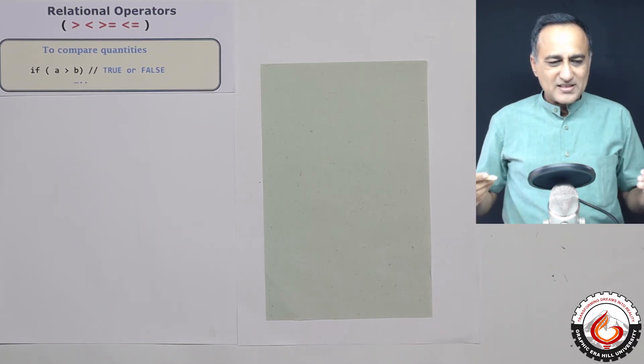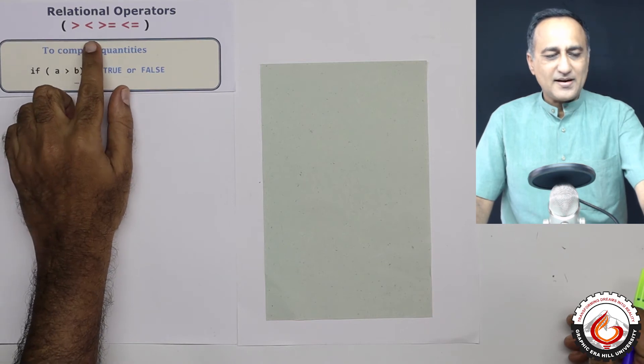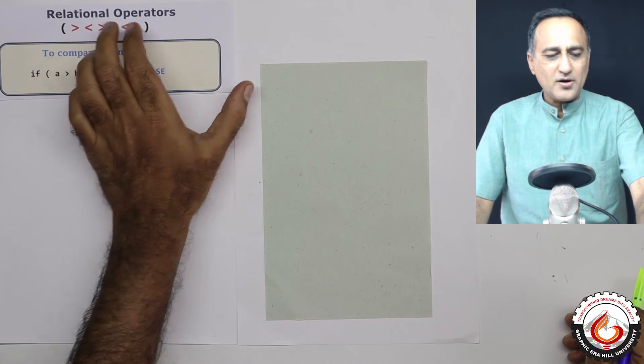So let's take first the relational operators. The relational operators in C are greater than, less than, greater than or equal to, and less than or equal to.